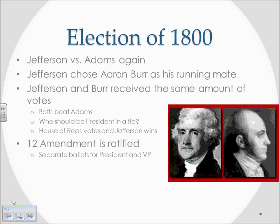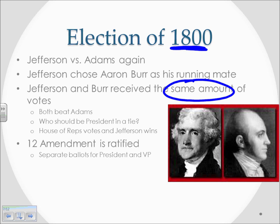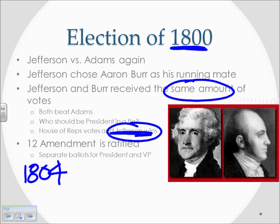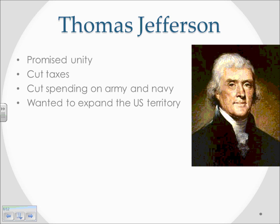Because Adams lost support over the quasi-war and the Alien and Sedition Acts rallied Republican support, Adams was defeated in the election of 1800. Jefferson and Adams ran again; Jefferson had Aaron Burr as his running mate. Both Jefferson and Burr beat Adams but ended up with the exact same number of electoral votes — a tie — so the vote went to Congress. There were many Federalists in Congress who wanted to irritate Jefferson. Eventually the House of Representatives decided Jefferson would win. After this, in 1804, the 12th Amendment was ratified, which established separate ballots for president and vice president, so voters now indicate specifically who they're voting for for each office.